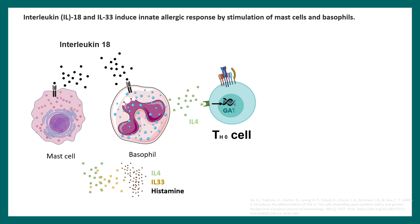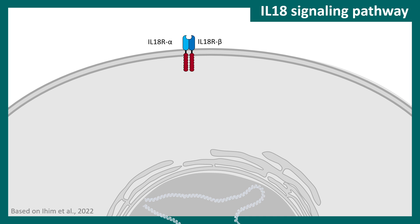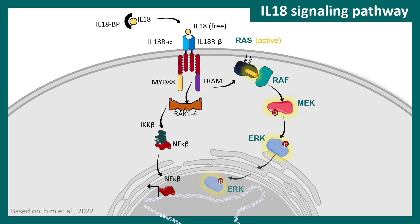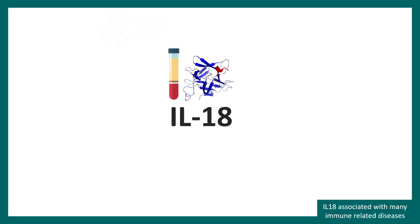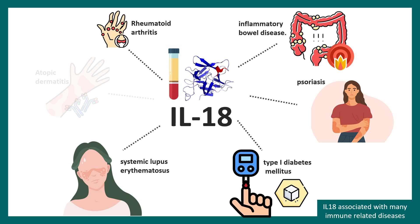Interleukin 18 and interleukin 33 can induce innate allergic responses by stimulating mast cells and basophils, triggering secretion of IL-4, IL-33, and histamine. IL-4 can trigger TH0 cell differentiation into the TH2 subtype. Like other interleukin signaling, IL-18 acts via MYD88 and TRAM, activating IRAK kinases, NF-kappa B, and the MAP kinase pathway, producing more inflammatory mediators. Interleukin 18 is clinically relevant in rheumatoid arthritis, inflammatory bowel disease, psoriasis, type 1 diabetes mellitus, systemic lupus, and atopic dermatitis.